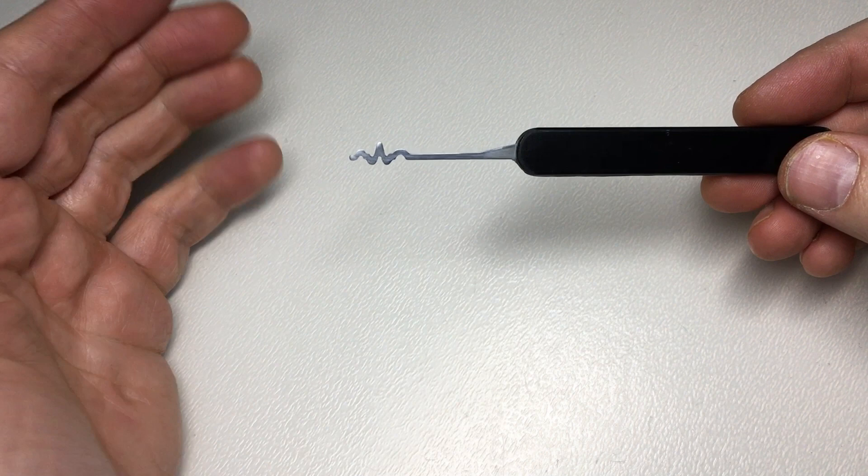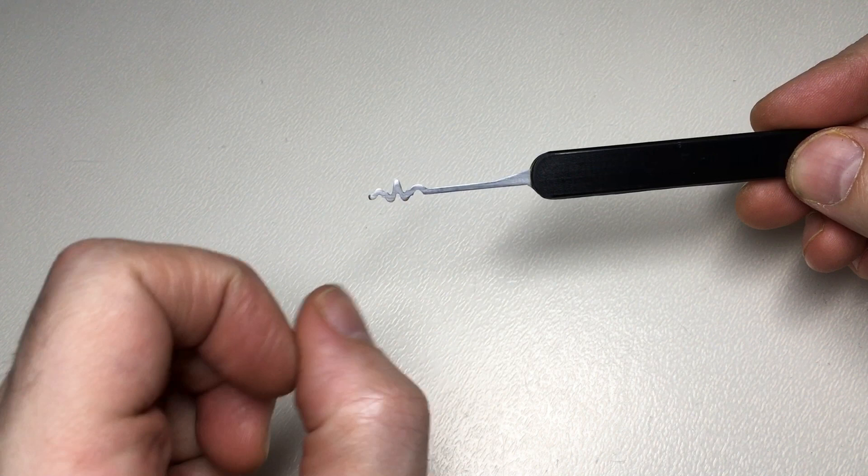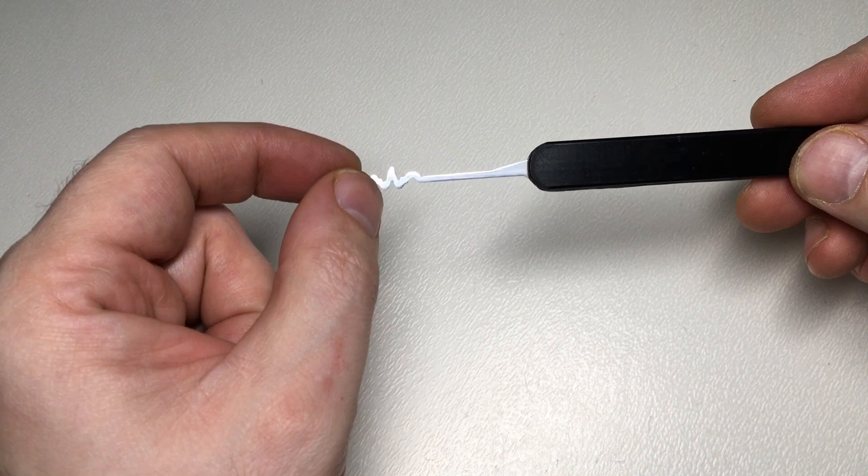You have the P wave, Q, R, S, and T wave—I didn't put the small U wave on there.